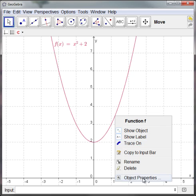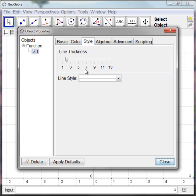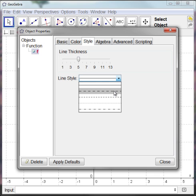I can also, in Object Properties, change the type of line. So, let's make that a little heavier line. If I want to get a dotted line, I can do that there as well.